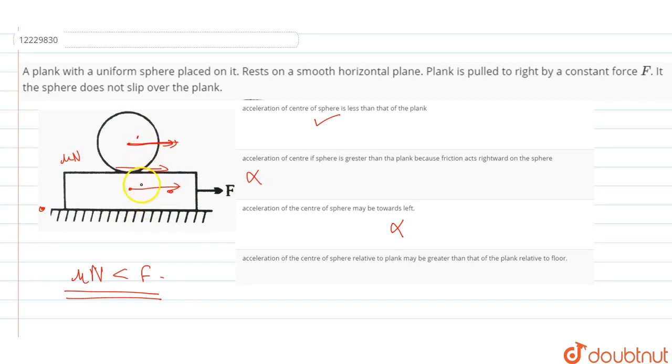So both of the acceleration of the ground respect, the acceleration of the sphere is A of sphere plus A of plank. Then A of plank and both of the direction are rightwards. So this is my block, obviously rightwards.